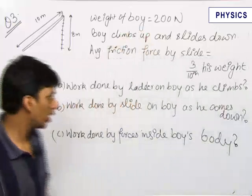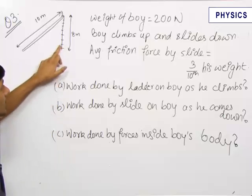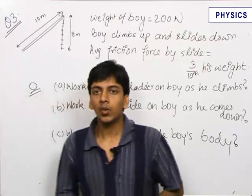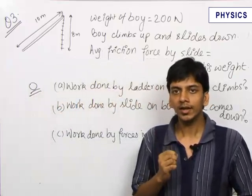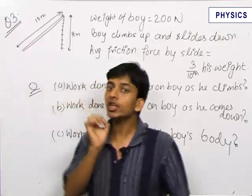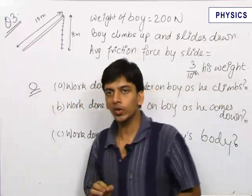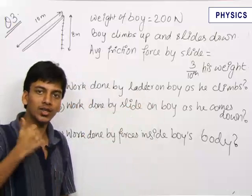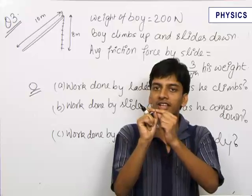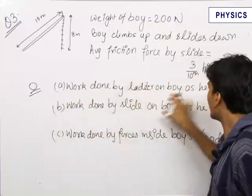The first part is to find out the work done by the ladder on the boy as he climbs. When the boy is climbing, the work done by the ladder on the boy will be zero. The reason is that work done equals force multiplied by the displacement of the point of application of force. As the man climbs, there is a normal force acting on his feet, but when the normal force is acting there is no displacement, and as soon as there is displacement there is no normal force acting — so the net work done by the ladder is zero.